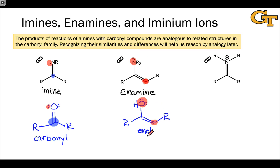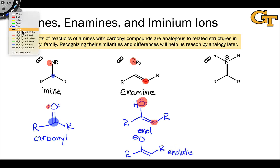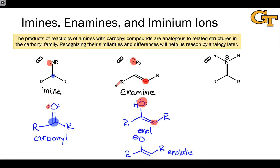Also worth mentioning here is the conjugate base of an enol, in which we've deprotonated the hydroxyl oxygen — this is called an enolate. An enolate, because of its negative charge, is even more nucleophilic than an enamine, with O- and the alpha carbon both being strongly nucleophilic. The basic structure is analogous to the enamine and the enol, with some nucleophilic heteroatom — here an anionic oxygen — linked to a carbon-carbon double bond.